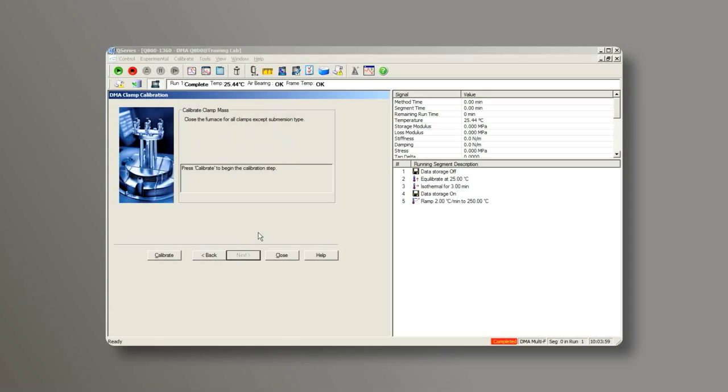Close the furnace from the instrument touch screen, then click on Calibrate. This first calibration step is to calibrate the mass of the movable clamp.